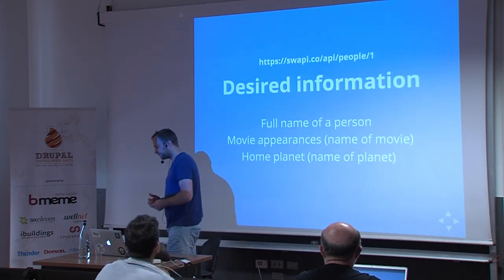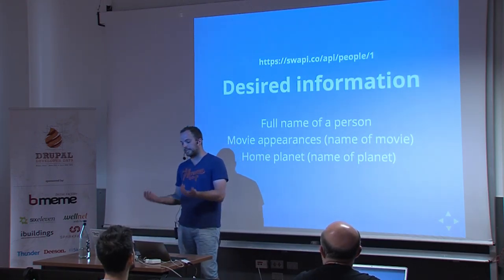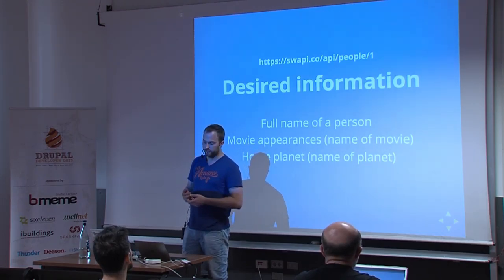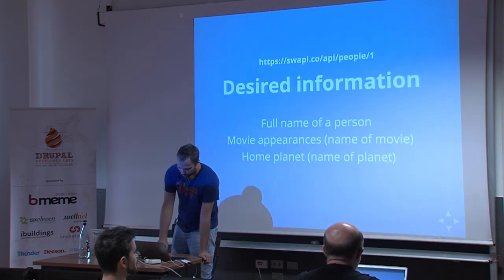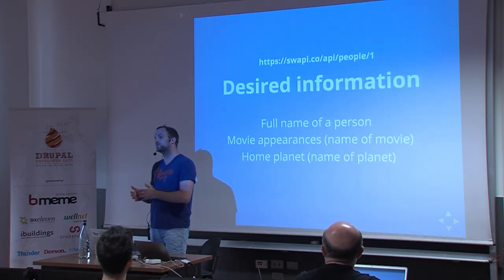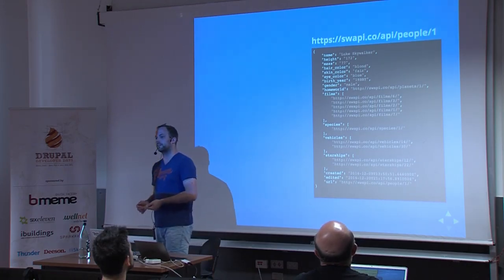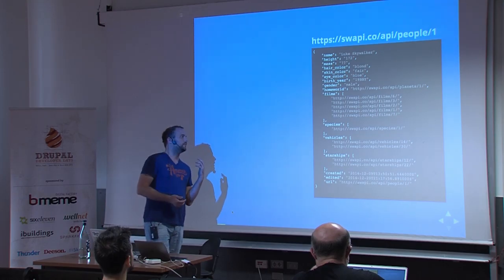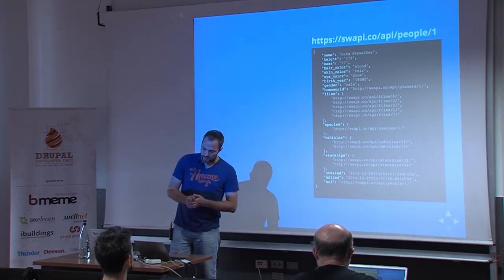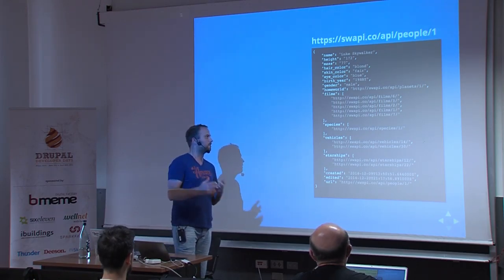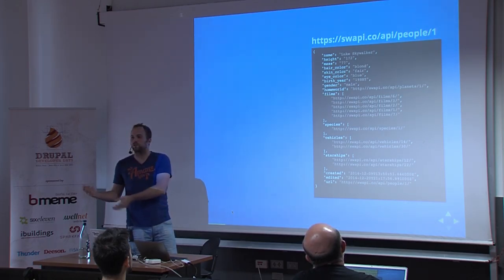Let's look at some examples. Assume you want to fetch data from a Star Wars API. You want to render the names of all the people that appeared in any Star Wars movie, the list of movies they appeared in, and the name of their home planet. In an ideal world you'd only get that data back from your REST resource. But in reality, you call a resource and get all the data associated with that model. All you get about movies is the URL at which you can fetch that data.